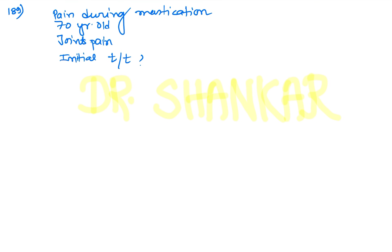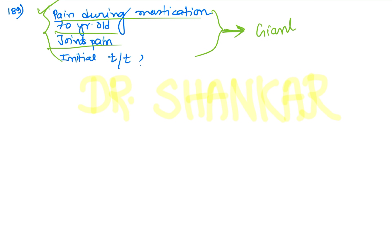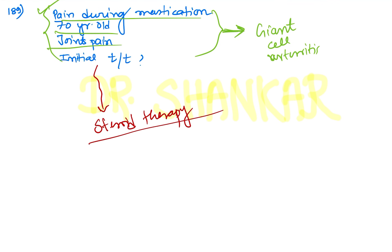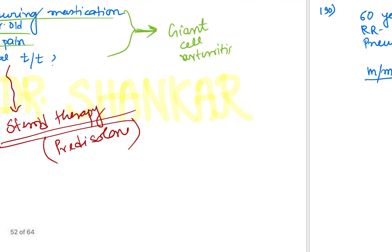An elderly patient with pain during mastication and joint pain — the diagnosis is most likely giant cell arteritis. Initial treatment is to start the patient on steroid therapy. Prednisolone was the option in the exam, and that is the best possible answer.